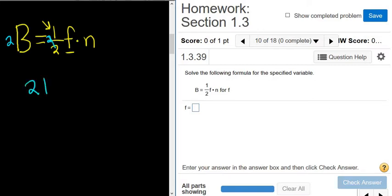So you get 2B equals f times n. We're almost there. Now we just have to finish solving for f.